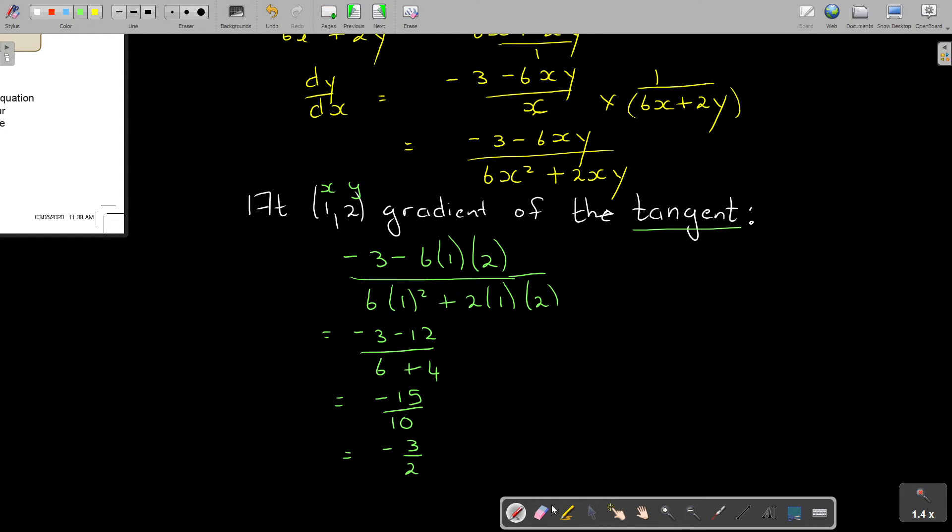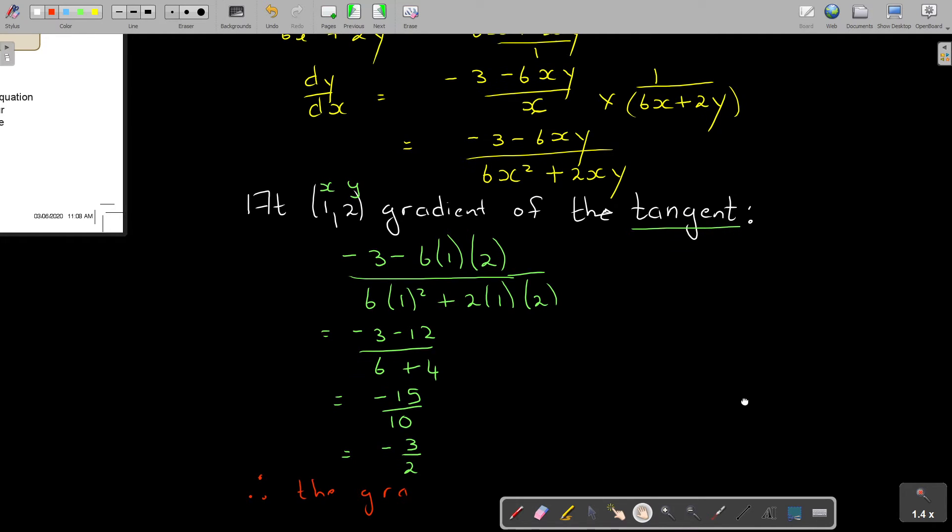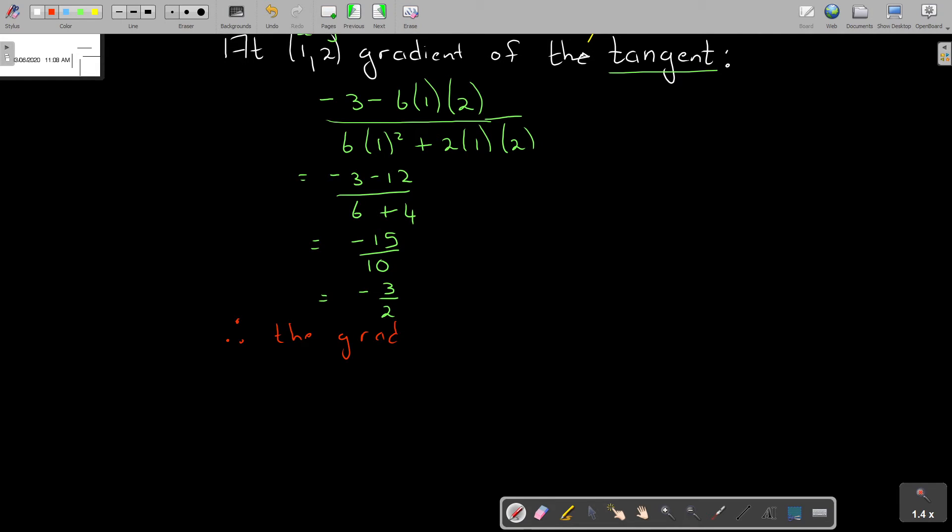So therefore, the gradient of the normal is positive 2 over 3, different signs and reciprocal. Now if you have to find the equation, it's y minus y1 equals m(x minus x1). You just substitute this m. You don't have to say 1 over m and different signs. Your point (1, 2) is x1, y1. Let's substitute that.